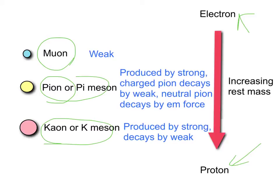The muon decays through the weak nuclear force. The pion is produced by the strong force and the charged pion decays by the weak force, but the neutral pion decays by the electromagnetic force. And sometimes you'll see pions drawn like this: positive, negative, and neutral.